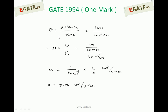The drift velocity can be calculated as distance divided by time, with units of centimeter per second. So the drift velocity is calculated using the formula distance by time. Distance is given as 1 centimeter and time is 20 microseconds, since the minority carriers move a distance of 1 centimeter.